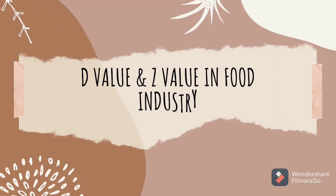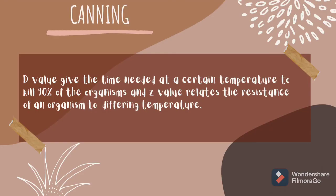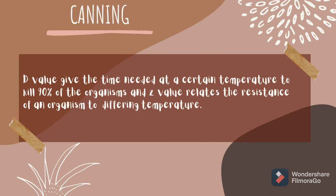D-value and Z-value are both important in the canning industry. D-value gives the time needed at a certain temperature to kill 90% of the organisms, while Z-value relates the resistance of an organism to differing temperatures. Thus, both are important in the canning process.